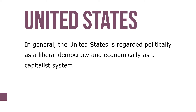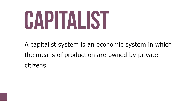In general, the United States is regarded politically as a liberal democracy and economically as a capitalist system. Liberal democracy is a fundamental form of political arrangement founded on the concepts of popular sovereignty and limited government. A capitalist system is an economic system in which the means of production are owned by private citizens.